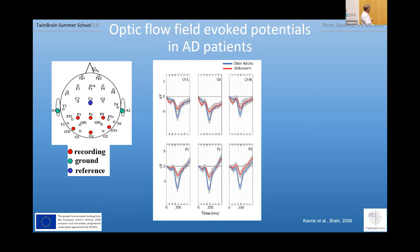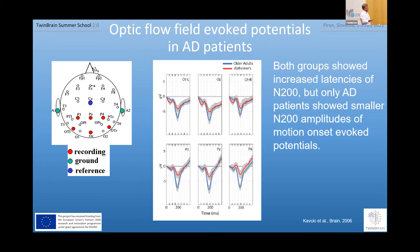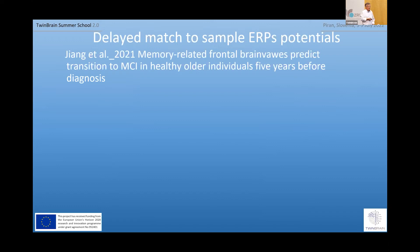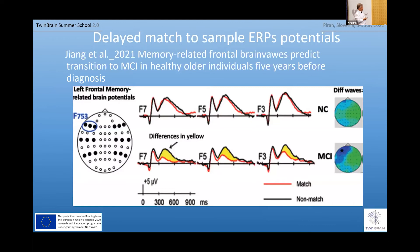There is not much difference in latency — slight difference. From personal experience I can tell you that in some patients you simply cannot get N200, so you have to remove that person from your sample. Both groups showed increased latency compared to younger adults, but only AD patients show smaller N200 amplitudes of motion onset evoked potential. The last presentation here is from our friend Young from University of Kentucky, who used a delayed match-to-sample task with only nine electrodes on each side.